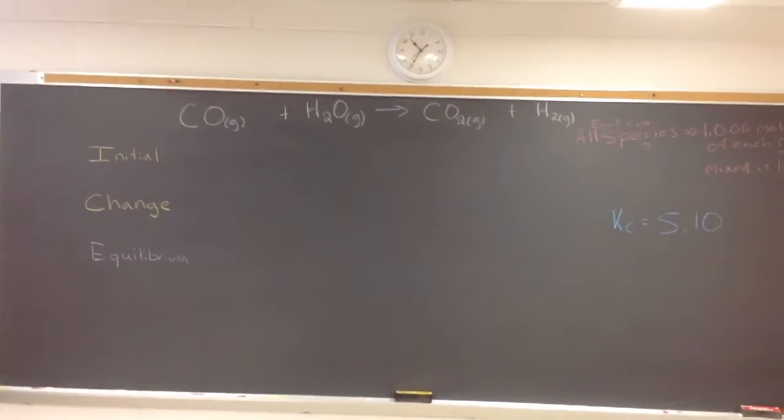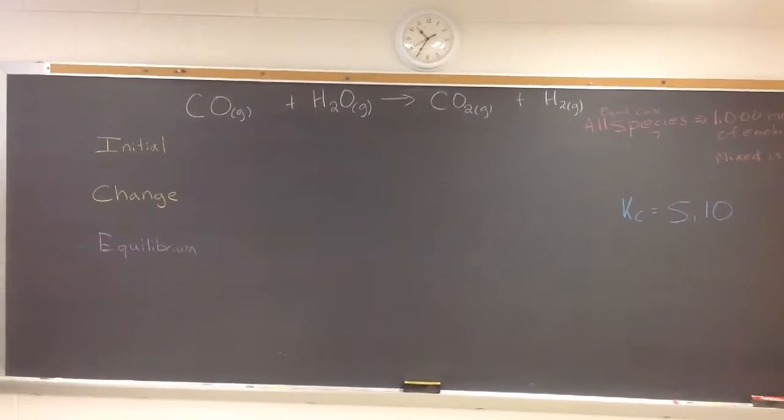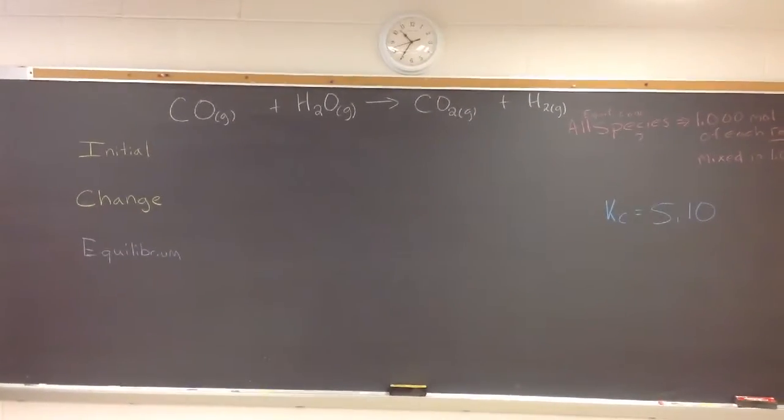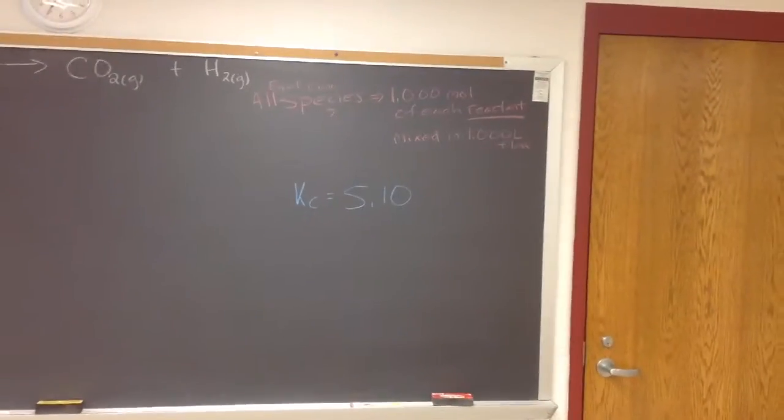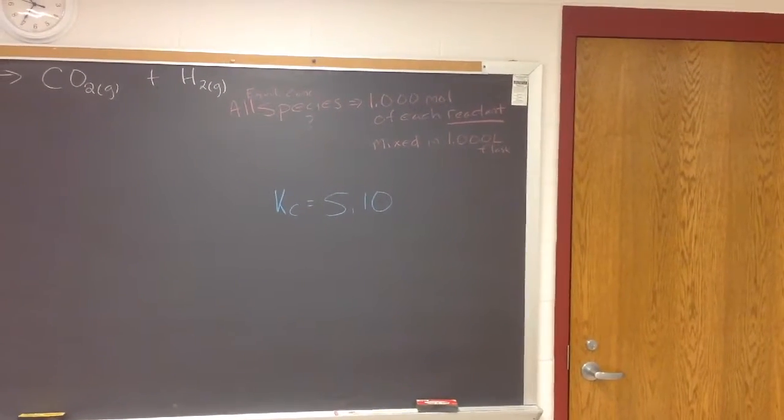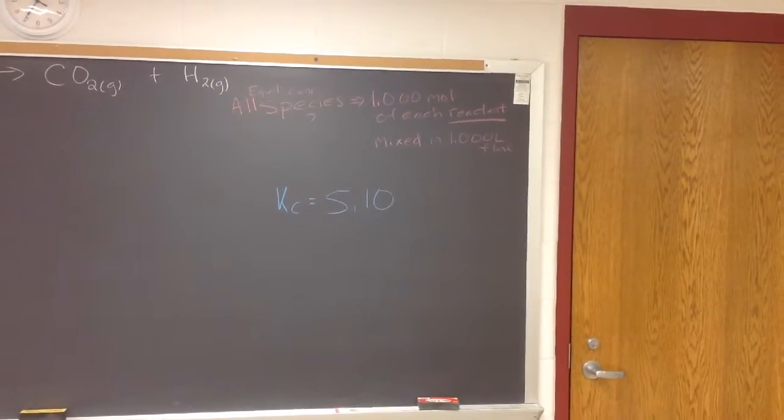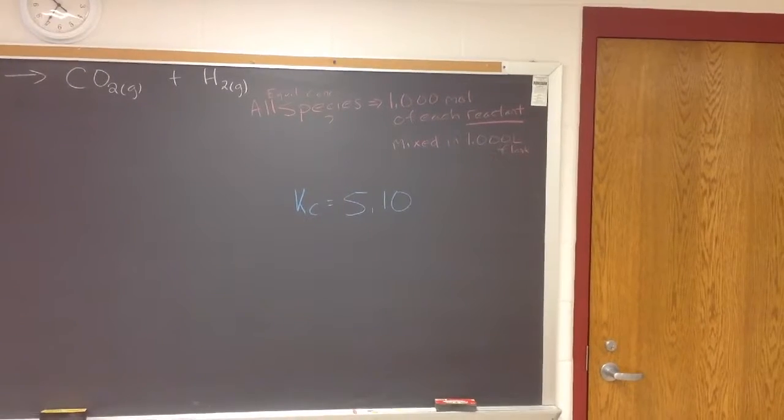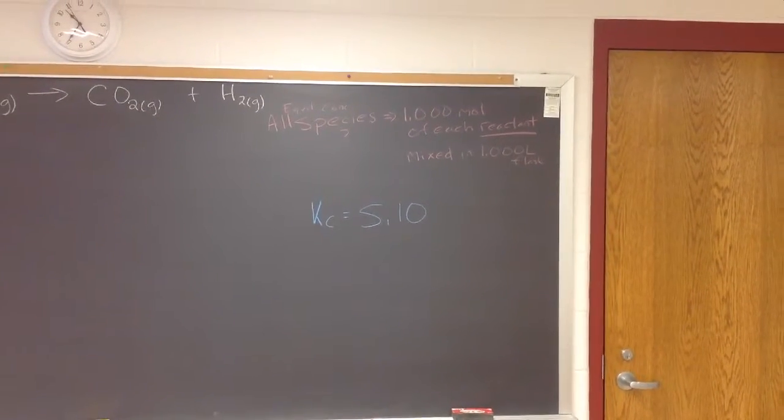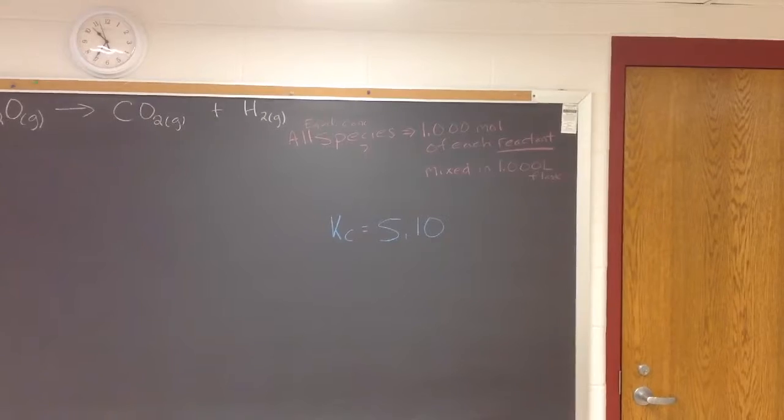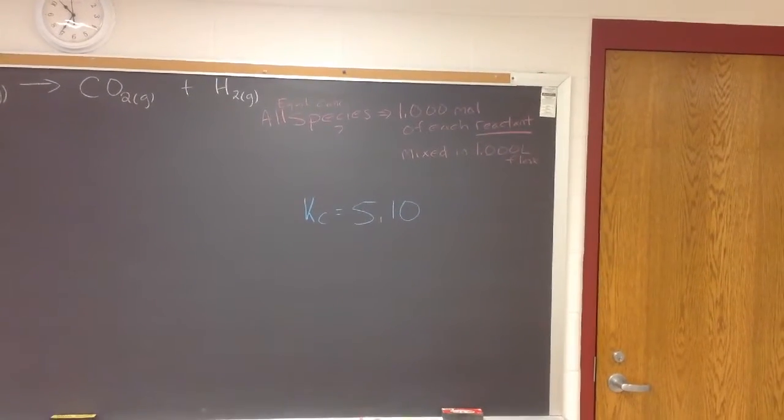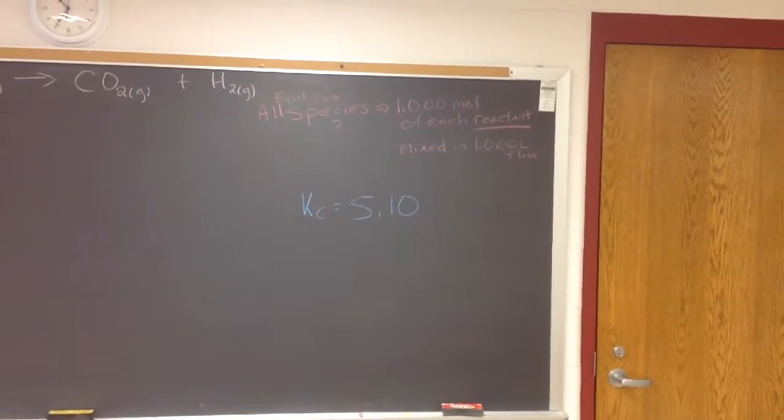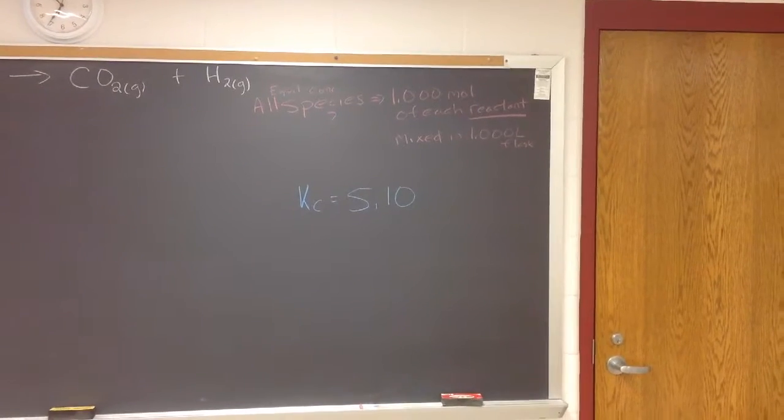All right folks, let's start off looking at a fairly simple gas reaction. The reaction of carbon monoxide with steam to produce carbon dioxide and hydrogen gas. And we can see here in this problem, if we start with one mole of each reactant in a one liter flask, we will know the equilibrium concentrations of all species, meaning both the products and the reactants at equilibrium. And we know the KC value is 5.1 in this condition.